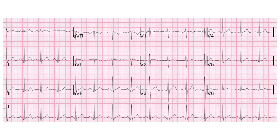Next is QRS duration, measured from the beginning of the Q wave till the end of the S wave. Normally the QRS duration is less than 3 small squares or 120 milliseconds.